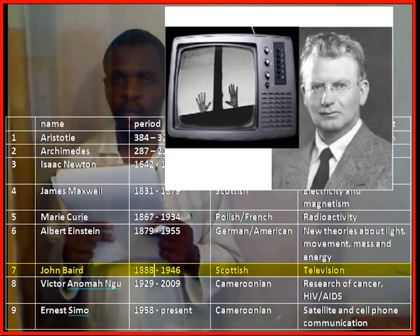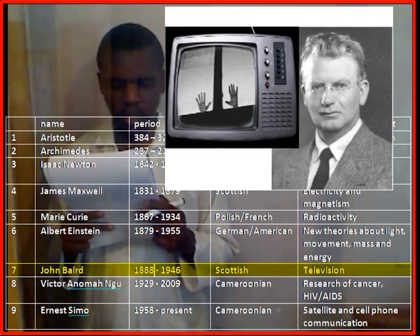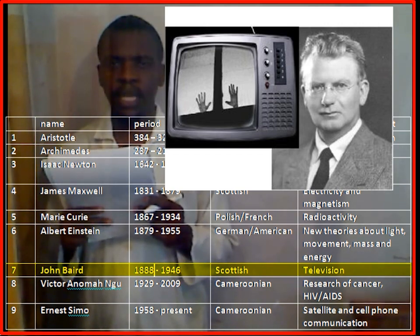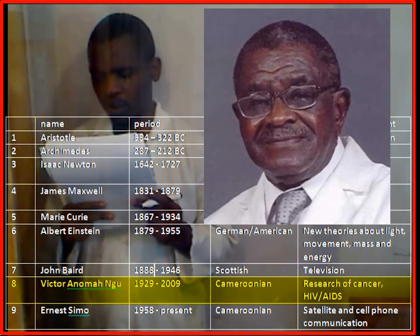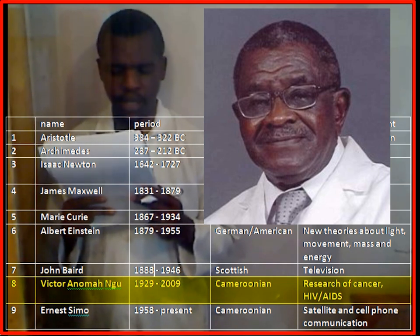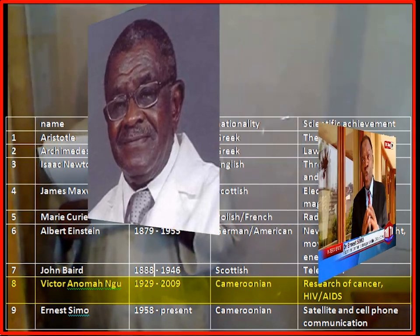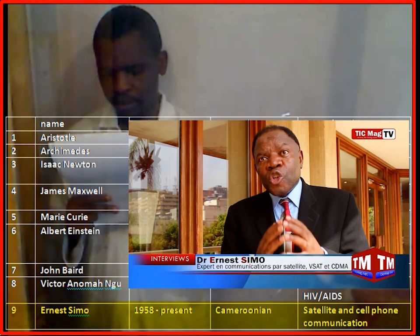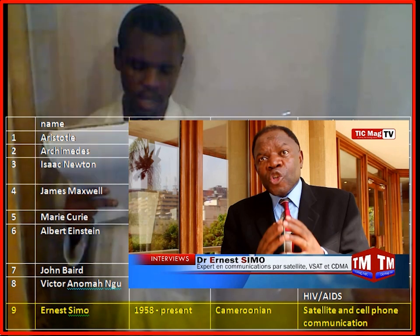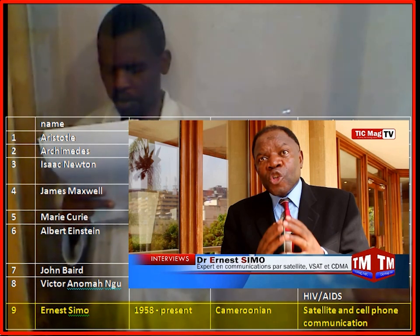John Baird lived between 1888 to 1946, he was Scottish, and he invented the television. Victor Anomago lived between 1929 to 2009, a Cameroonian, and he worked on cancer. Ernest Timo, born in the year 1958, a Cameroonian national, and worked on satellite and phone communication.